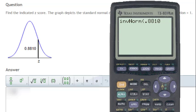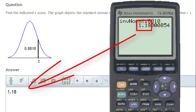The answer that appears is a rather long decimal. However, since this is a z-score, we will round this z-score to the hundredths, or second decimal place. Therefore, our answer for this problem will be 1.18.